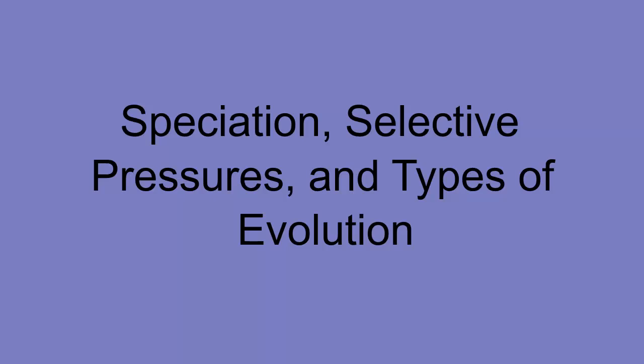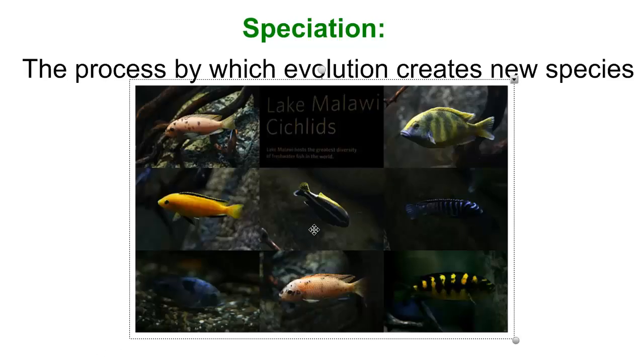And then we're going to talk about the kinds of evolution that scientists have identified since Darwin described the process of evolution. The patterns of evolution that we observe, because there's a couple of different patterns. So let's start off with speciation.